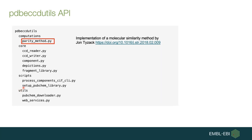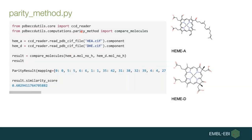PDBE-CCDUtils also implements some algorithms. One is a molecular similarity method developed by John Pisac — you can read the details in the corresponding paper. To use this method, import the compare_molecules method from the parity_method module. In this example, we look at the similarity of two variations of heme — heme A and heme B. We read the structures as in previous examples, call compare_molecules with the two objects, and get atom-level mapping between the two molecules as well as a similarity score, which is around 60% in this particular case.